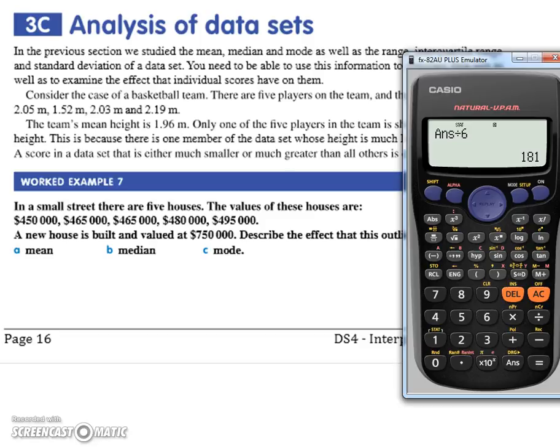Well, let's do what you said. Let's add up these first ones first. Let's find the mean of the existing five houses. So 450, 465, 665...